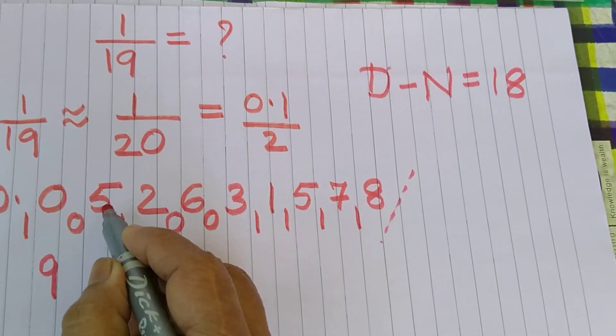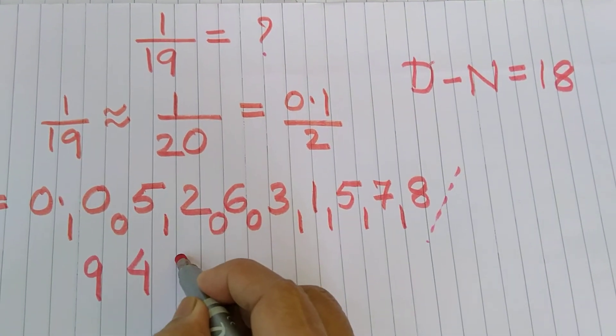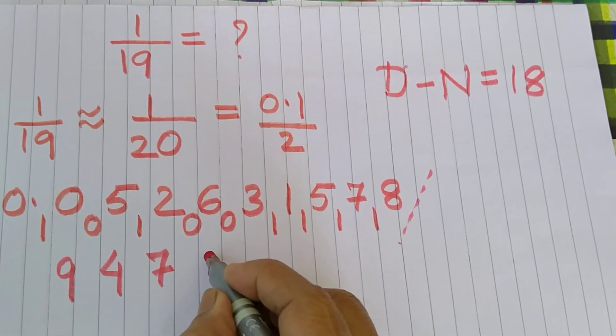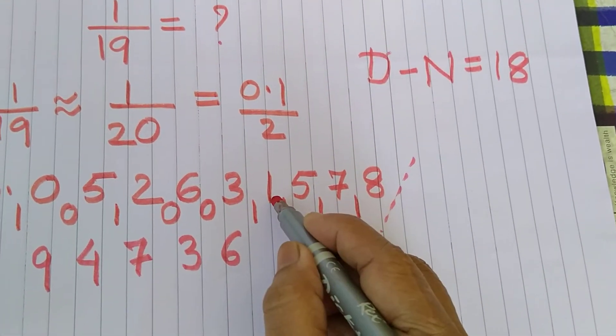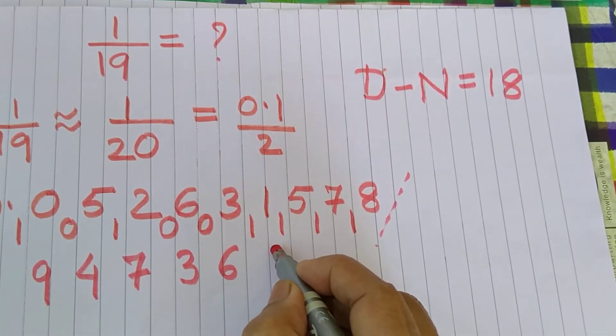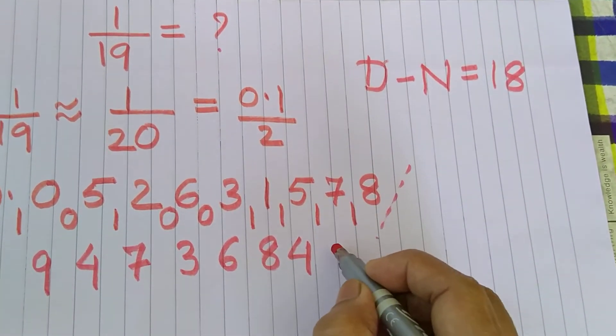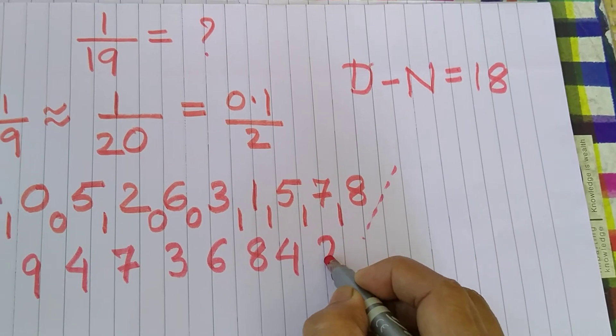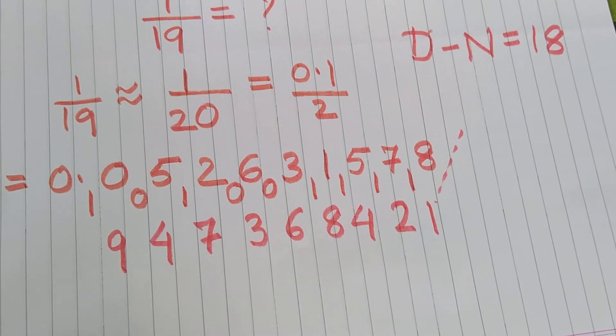That is 0. So we have 9. 5. So 4. 2. So 7. 6. So 3. 3. 6. 1. That is 8. 5. So 4. 7. That is 2. 8. So 1. So 1 upon 19 now becomes 0.